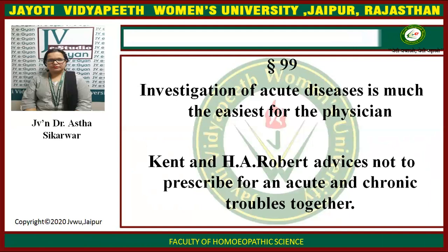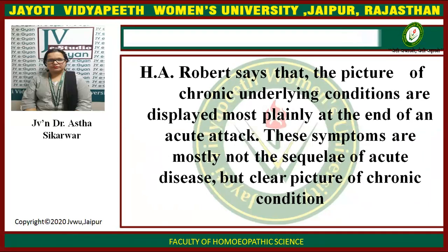Aphorism number 99: investigation of acute diseases is much the easiest for the physician because the condition is very recent and the patient remembers everything in acute diseases. Kent and H.A. Roberts advise not to prescribe for acute and chronic troubles together. H.A. Roberts says that the picture of the chronic underlying conditions is displayed most plainly at the end of an acute attack. These symptoms are mostly not the sequel of acute disease but clearly picture the chronic condition.